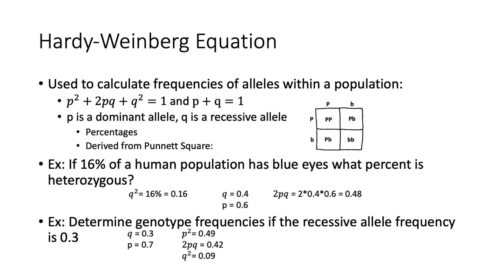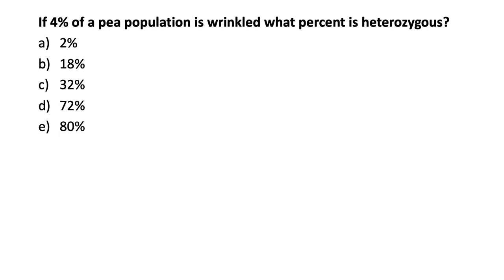Okay, I'm going to ask you one of these Hardy-Weinberg equations. If 4% of a population is wrinkled, what percent is heterozygous? I'm going to give you a few seconds, go ahead and pause the video, and then I'll go over the answers.